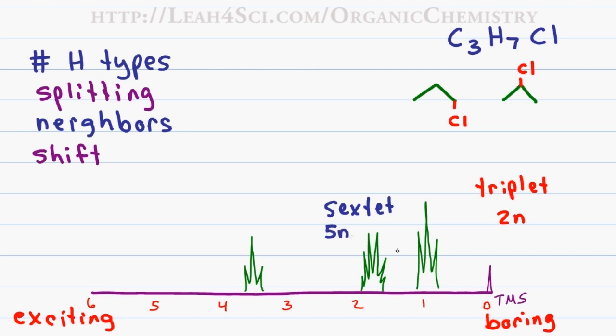The shift for this peak is slightly away from the boring region. That means given the chlorine on the molecule, the hydrogens responsible for the second peak are going to be closer but not closest to the chlorine atom.